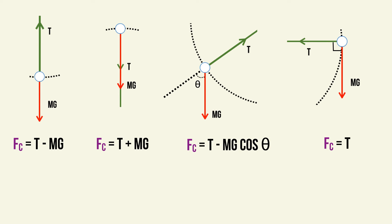Let's look at the four most common positions you'll have to deal with. For the first situation, the centripetal force must act upwards for the object to undergo vertical circular motion, and that is equal to T minus mg. In the second situation, the centripetal force must act downwards, and that is therefore equal to T plus mg.